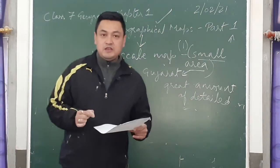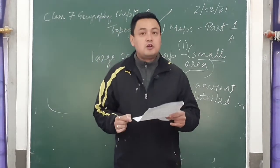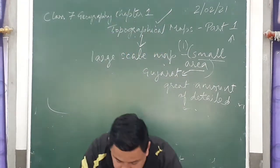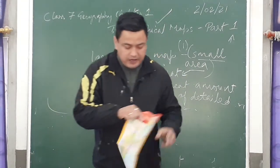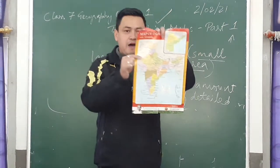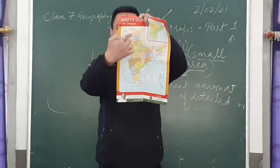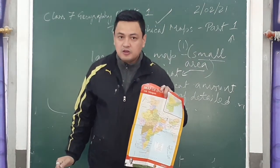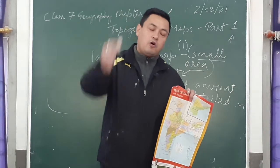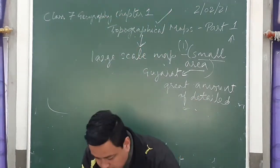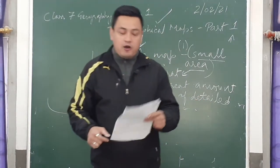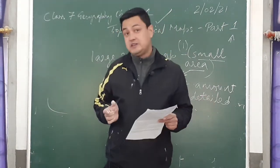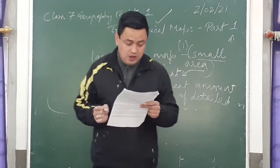What are political features? Political features show the boundaries of countries. India has boundaries — national boundaries — and international boundaries, which are shown on topographical maps, as well as boundaries of states and cities.